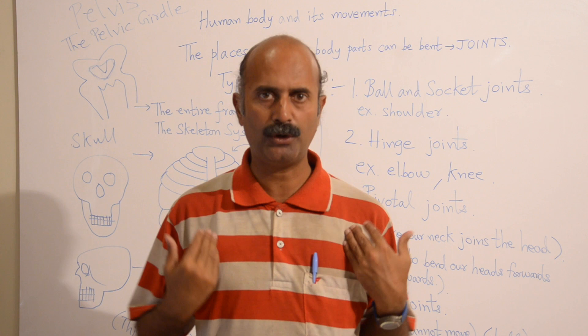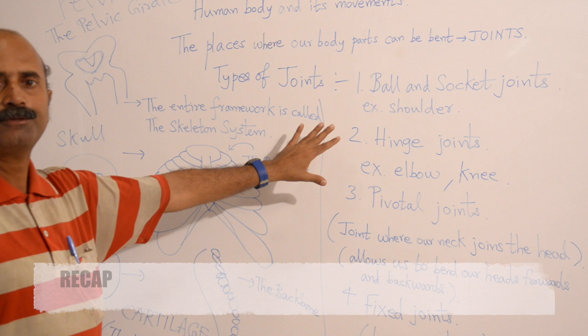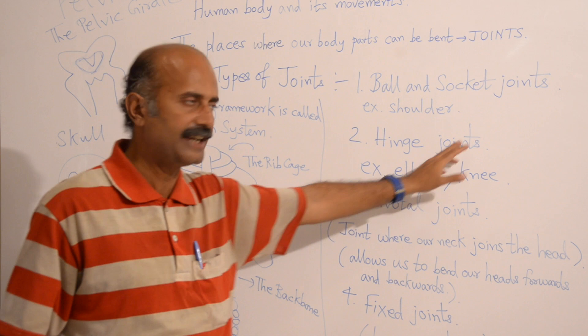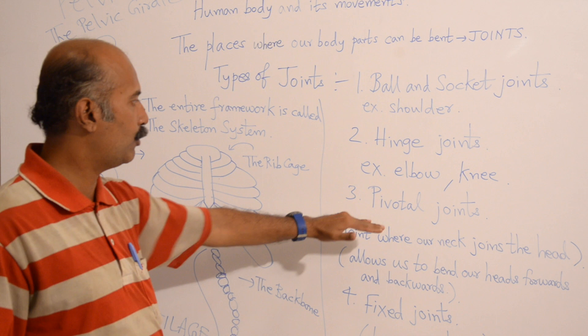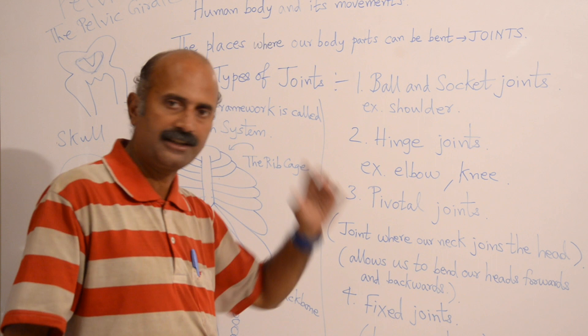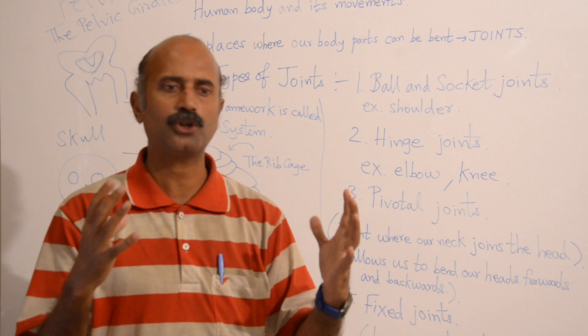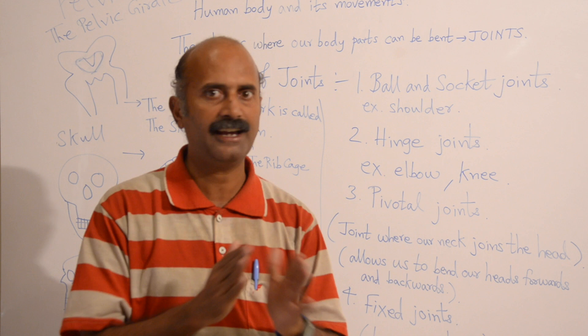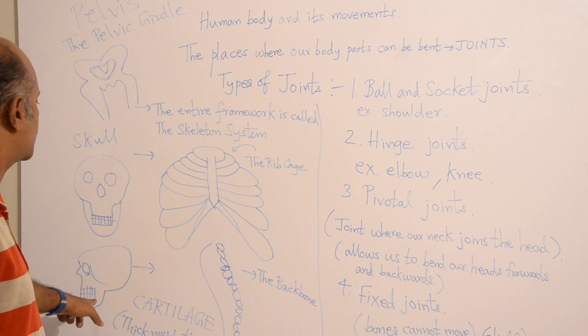Let me recap. The main types of joints are: ball and socket joints, which enable complete 360-degree rotation; hinge joints, which allow 180-degree rotation only in one direction; pivotal joints, where our neck meets the head; and fixed joints, mainly in the skull and internal body parts where the bones are jointed in a fixed, immovable way. We also discussed the rib cage, the backbone, the skull, the pelvic girdle, and the entire framework known as the skeletal system.